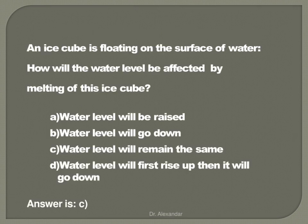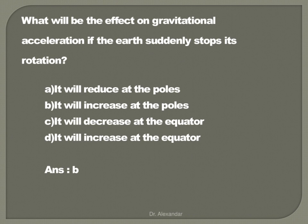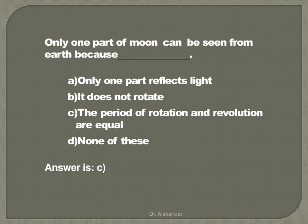An ice cube is floating on the surface of water. How will the water level be affected by melting this ice cube? The water level will remain the same. What will be the effect on gravitational acceleration if the earth suddenly stops its rotation? It will increase at the poles only. Only one part of the Moon can be seen from the Earth because the period of rotation and revolution are equal.